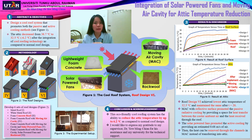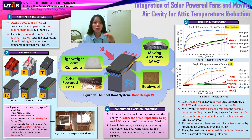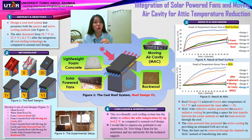The temperature plateau is reached and stabilised at 20 minutes. The moving air cavity with reflective inner surface promoted passive radiative cooling by providing a space for heat transfer between the cooler ambient air, the air stored in the MAC, and the heat received through the roof. The solar power fans promoted active cooling by providing an estimated 0.68 meters per second of air, increasing the amount of air getting into the MAC by actively drawing in cooler ambient air. The heat can then be removed through the channels in MAC instead of transferring into the attic. With rock wool acting as the thermal brake and insulator, it terminated the heat at the MAC.